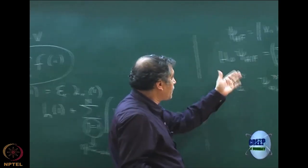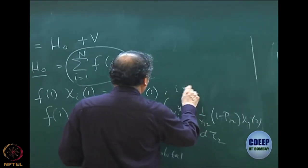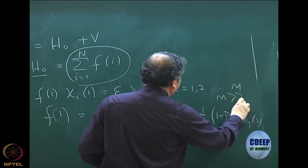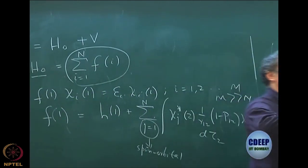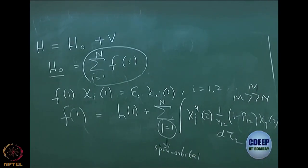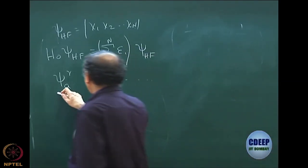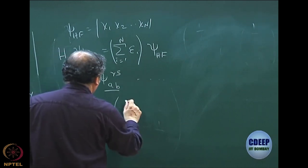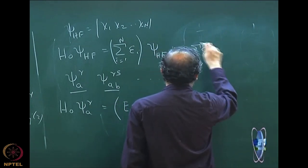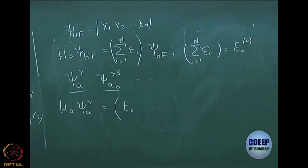For the same reason, since all those spin orbitals are eigenfunctions of the Fock operator, each of these determinants is also an eigenfunction of H₀. This is because they are antisymmetric products of the spin orbitals. Some of them involve virtual orbitals, but they are also included. If I have solutions up to capital M, which is much larger than n, I can form entire n-tuply excited determinants as eigenfunctions of H₀.